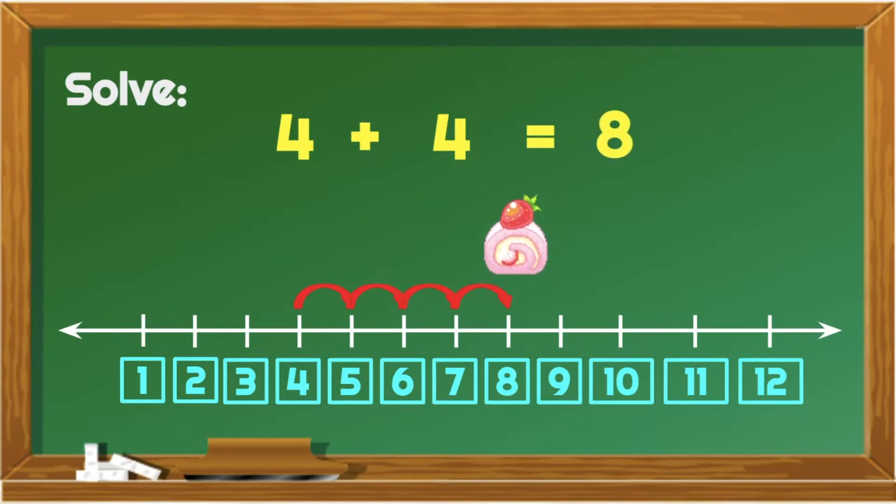Good job! For number 3, let's add 6 plus 5. Let's start with 6, and let's count on. 7, 8, 9, 10, 11. 6 plus 5 is equal to 11.